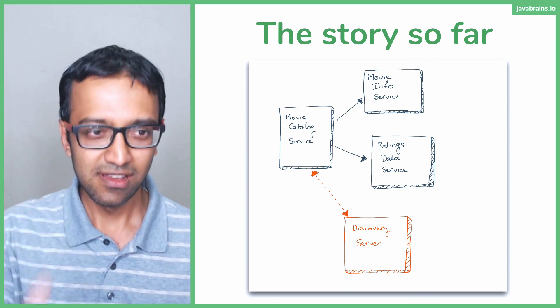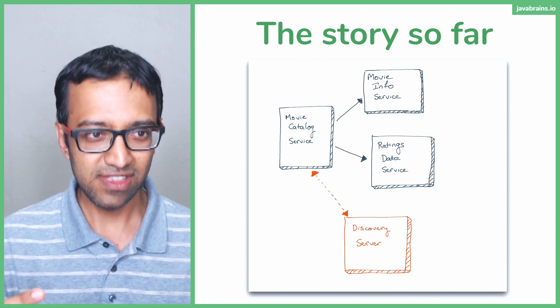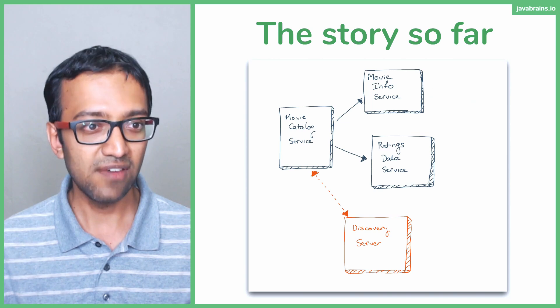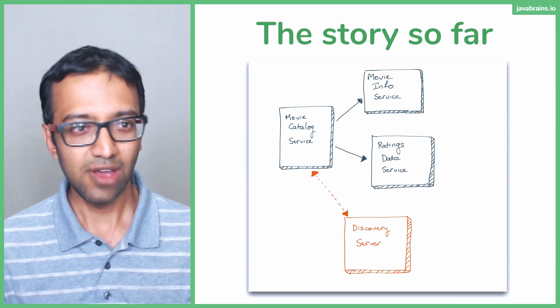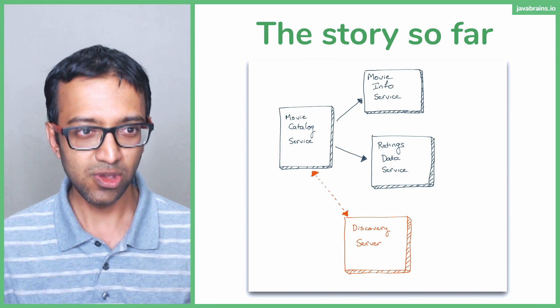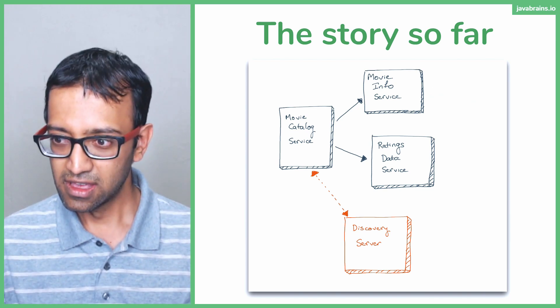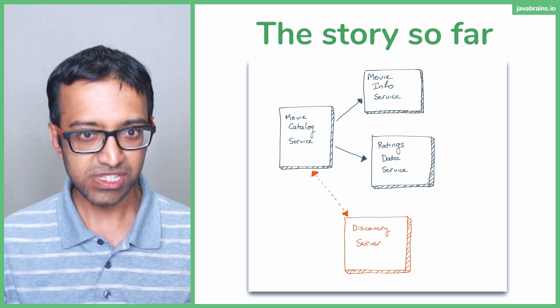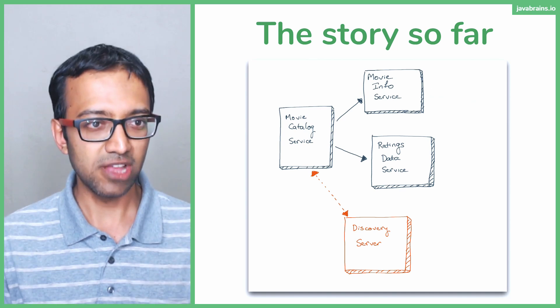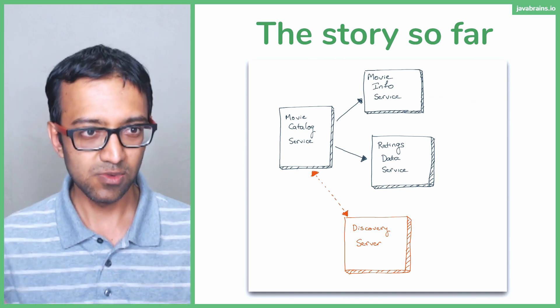This is what we did so far. So if you have missed level one, this is what you've missed. You've missed how to stand up these different microservices using Spring Boot, kind of start from the scratch, and how to have a discovery server, the Eureka server to have them talk to each other. So the movie catalog service is the one service which is doing all the communication. It's calling the movie info service and it's calling the ratings data service. It was using Eureka to get the address, make a call, get the response, then coordinate, orchestrate everything, and then return back the response.